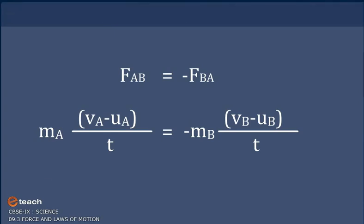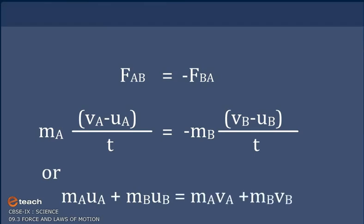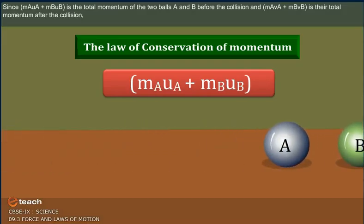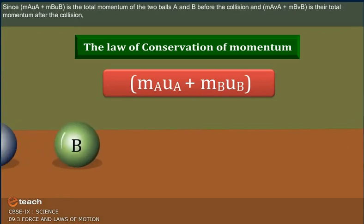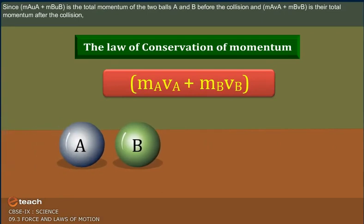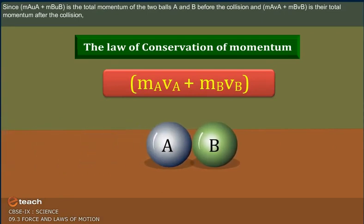This gives MA UA plus MB UB equals MA VA plus MB VB. MA UA plus MB UB is the total momentum of the two balls A and B before the collision, and MA VA plus MB VB is their total momentum after the collision.